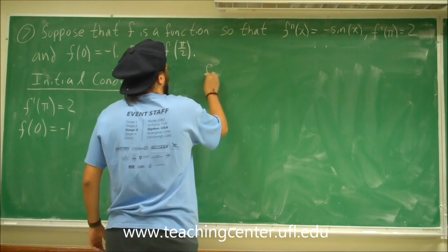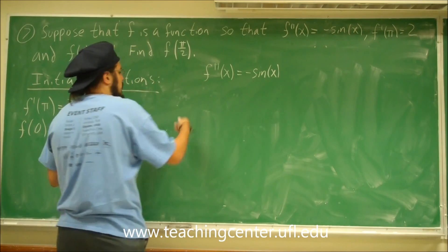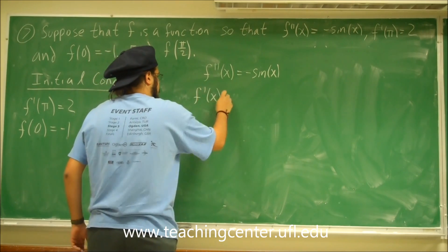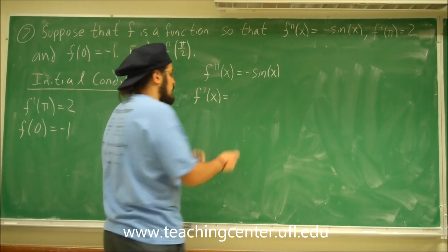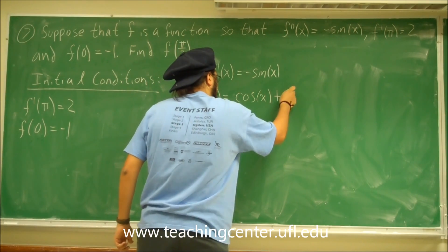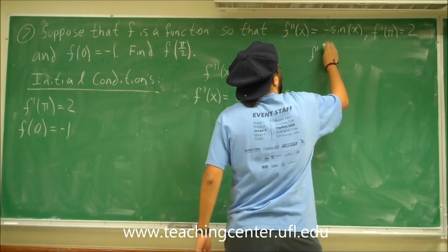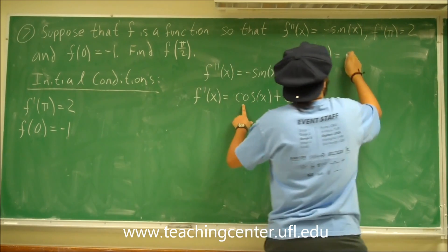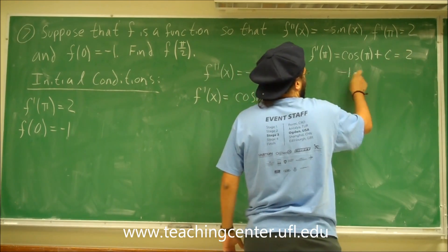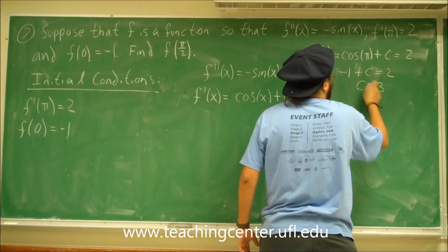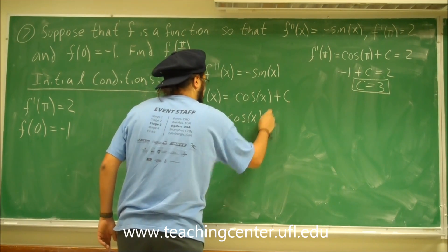So let's write down f double prime of x, that's equal to minus sine of x. Now let's take the antiderivative to get f prime of x. I want a function that, if I take the derivative of it, I get minus sine of x — well, we know that's cosine of x, plus some constant c. To find that constant c, I'll use the initial condition: f prime of pi equals cosine of pi plus c, and that's equal to 2. But cosine of pi is negative 1, so negative 1 plus c equals 2, therefore c is equal to 3. Now f prime of x is cosine of x plus 3.